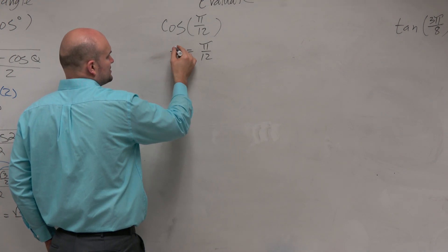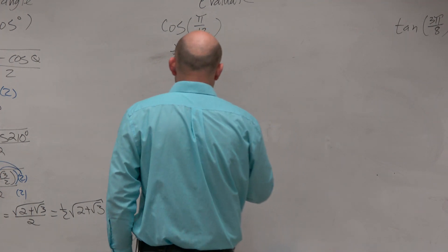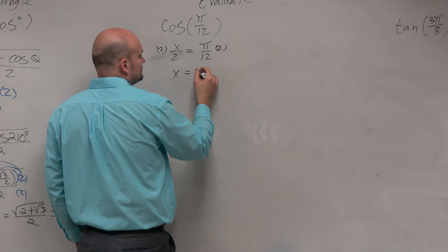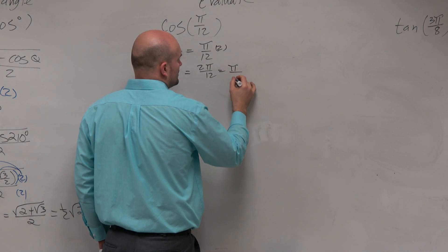I'm sorry, let's use x in this case. If my half angle is x over 2, which is π over 12, then what is my angle? Well, you'd multiply by 2 on top and bottom, so you get 2π over 12, which equals π over 6.